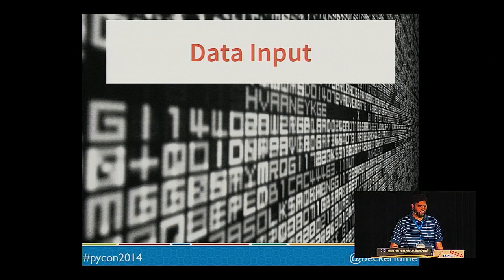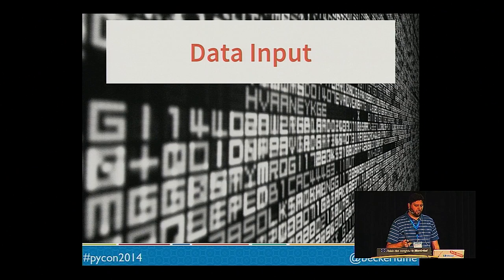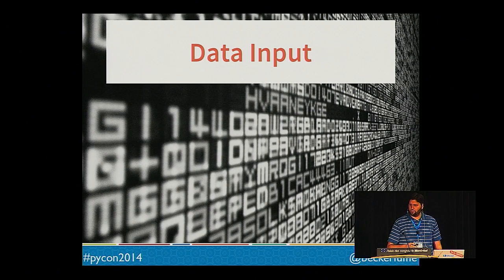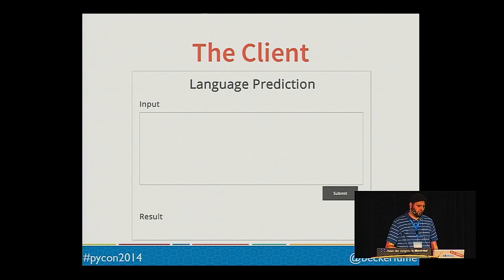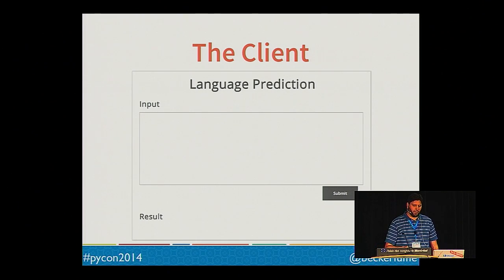Next, let's discuss how to get data into our model. Your data could be coming from many types of sources — a web front-end, a database trigger. In many cases you can't easily control the rate of incoming data, and you don't want to hold up the front-end or database while waiting for a prediction. In these cases, it's useful to process your data asynchronously. In my example, we created a simple web front-end similar to Google Translate, where a user can enter some text to be classified and get a classification back.